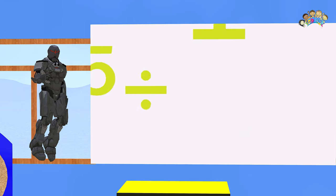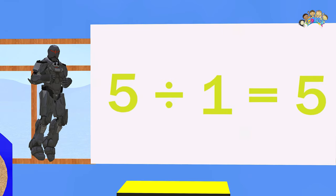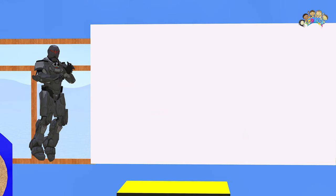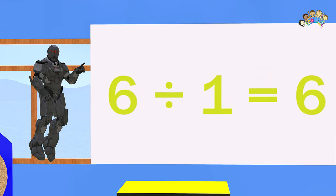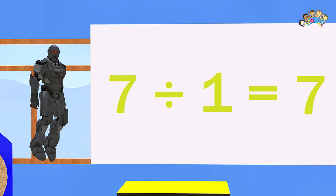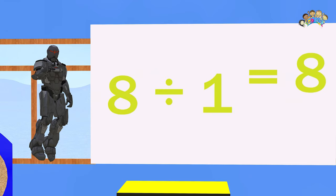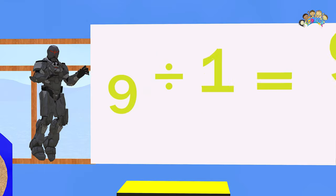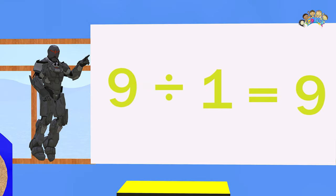Six divided by one equals six. Seven divided by one equals seven. Eight divided by one equals eight. Nine divided by one equals nine.